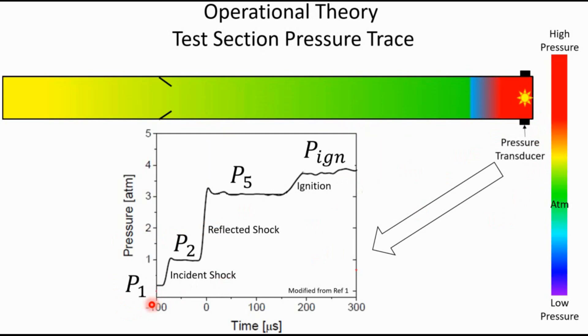Remember, in our very first slide, the pressure in the test section was blue, and that was at P1. Then that incident shock came past and shocked it up to a green state—that was P2. Then the reflected shock passed and brought it up to that teal color—that was P5. And now it has ignited, so we're at the ignition pressure. And so you can tell from this pressure trace when the incident shock has passed, when the reflected shock has passed, and when you have ignition.